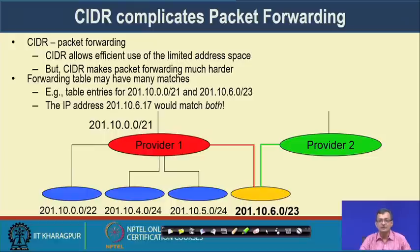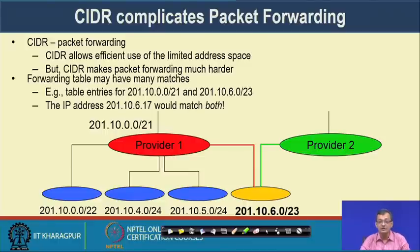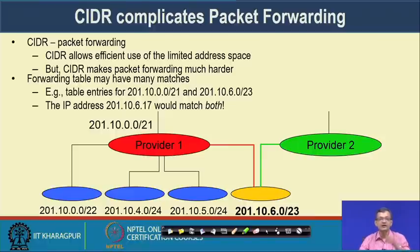CIDR complicates the issue because now any type of mask is possible. CIDR allows efficient use of the limited address space, but makes packet forwarding more complicated. The forwarding table can have many matches — for example, 201.10.0.0/21 and 201.10.6.0/23 can both match. The policy followed is longest prefix match: where the longest prefix matches, the packet is forwarded there.